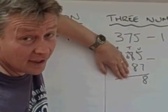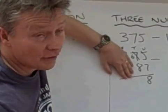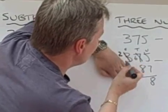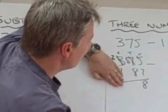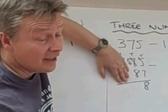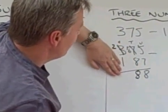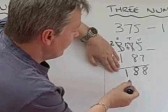But what I can do is apply exactly the same principles that I've learned before by borrowing from the hundreds. So that now becomes 2, and that now becomes 16. So 8 from 16 is 8, and 2 take away 1 is 1.